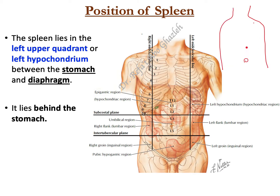There is also another division — we can divide the body into four quadrants. There are two lines: right upper quadrant, left upper quadrant, right lower quadrant, and left lower quadrant.